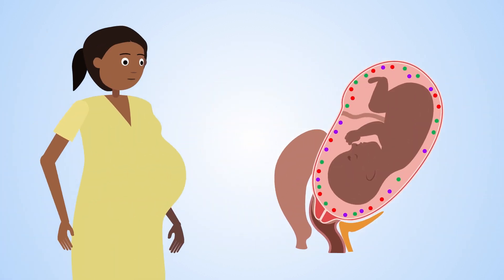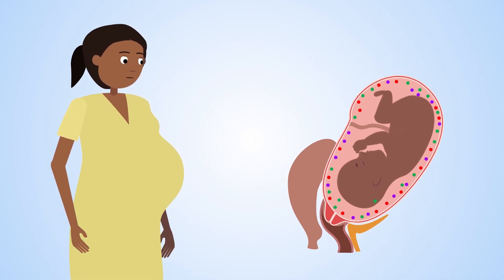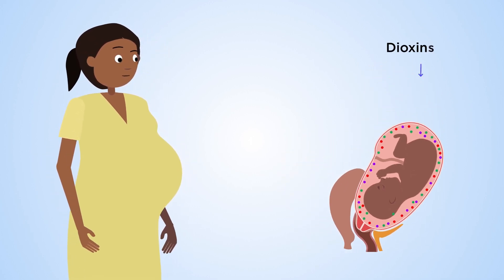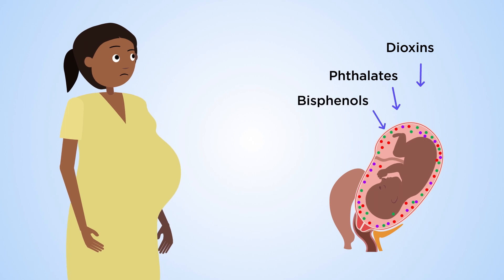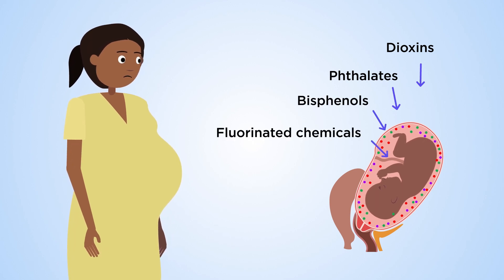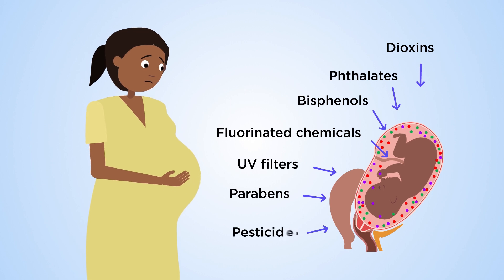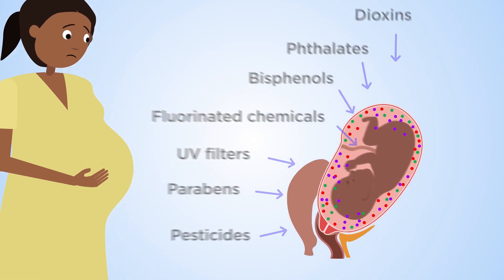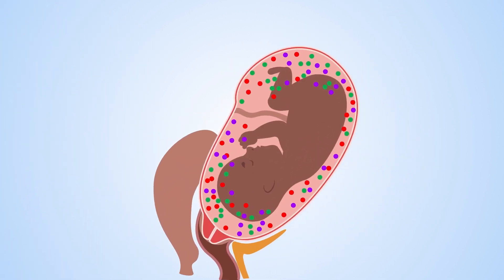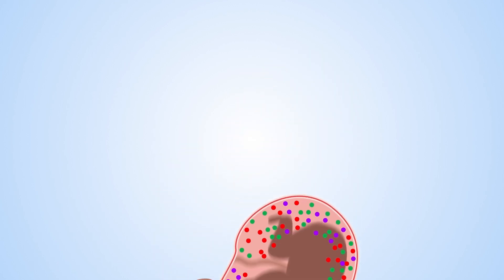From conception, people are exposed to a range of chemicals including environmental dioxins, phthalates, bisphenols, fluorinated chemicals, UV filters, parabens, and pesticides. Alone, in tiny doses they usually don't have an effect, but the risk they pose when combined is frequently underestimated.